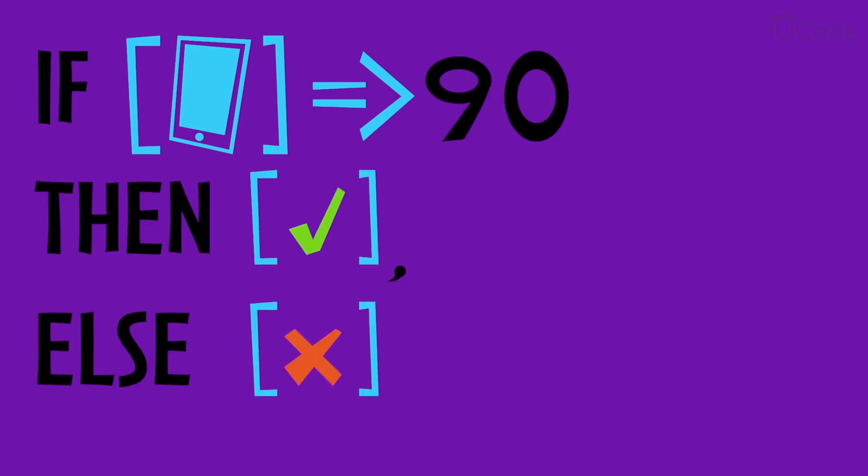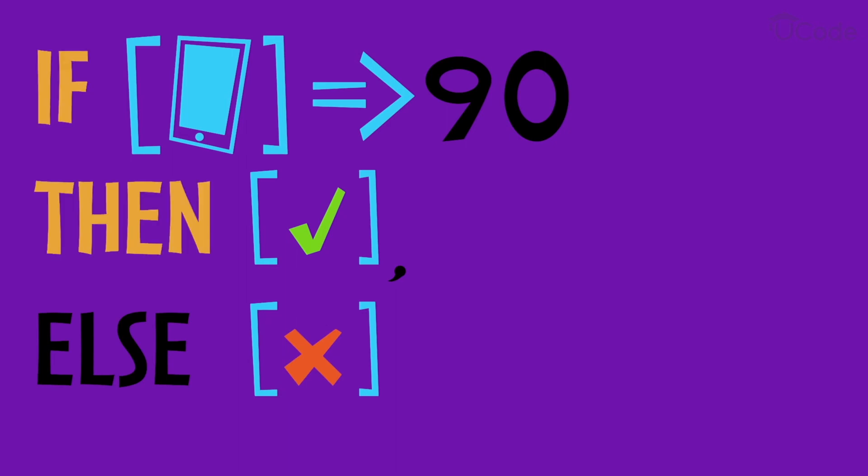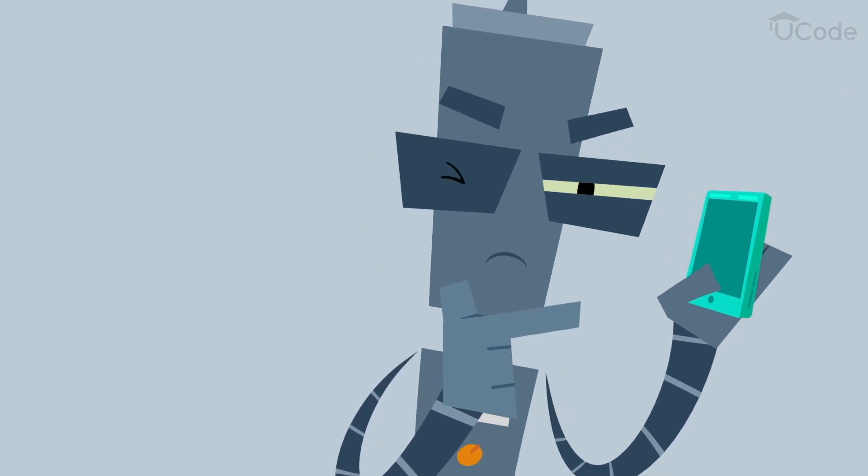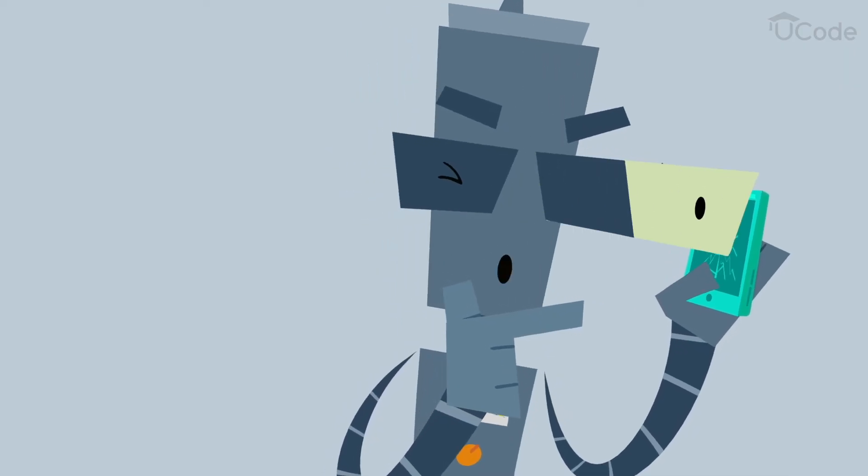We can write this as a simple formula. If the test score equals greater than 90, then put the phone in a box, else reject it. This is called an if-then-else conditional statement, and we use it as we program to help the robot make the right decision.